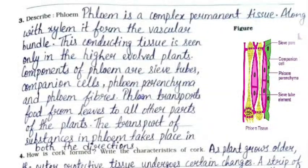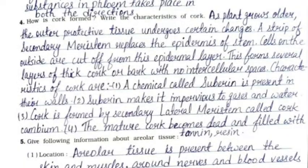Question 3: Describe phloem. Phloem is a complex permanent tissue that, along with xylem, forms the vascular bundle. This conducting tissue is seen only in higher evolved plants. Components of phloem are sieve tubes, companion cells, phloem parenchyma, and phloem fibers. Phloem transports food from leaves to all other parts of the plant. The transport of substances in phloem takes place in both directions.